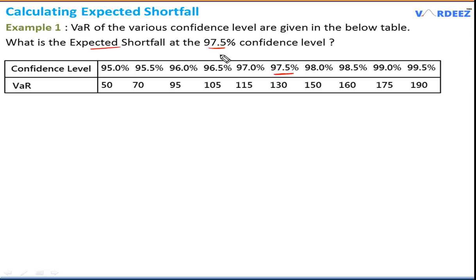I will ignore because expected shortfall is the average of all VARs above the specified VAR. Whatever confidence level we want to find, we take the average of all VARs above that level. This question is simple, but most people get confused whether to include the VAR at the target confidence level. The answer is no, we do not include it.